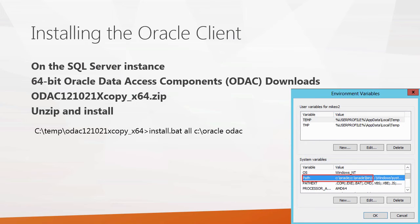Once you've done that, the readme file also directs you to modify your path variable. You can see that on the environment variables window — I've added the C:\Oracle and C:\Oracle\bin directories to the beginning of my path. This is all done on the SQL Server instance.